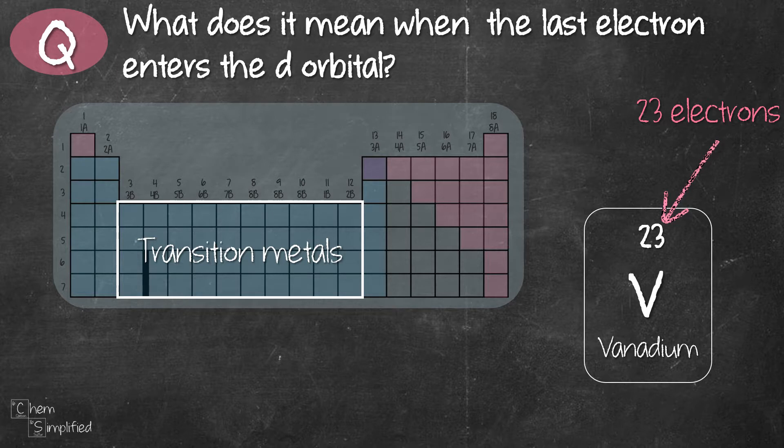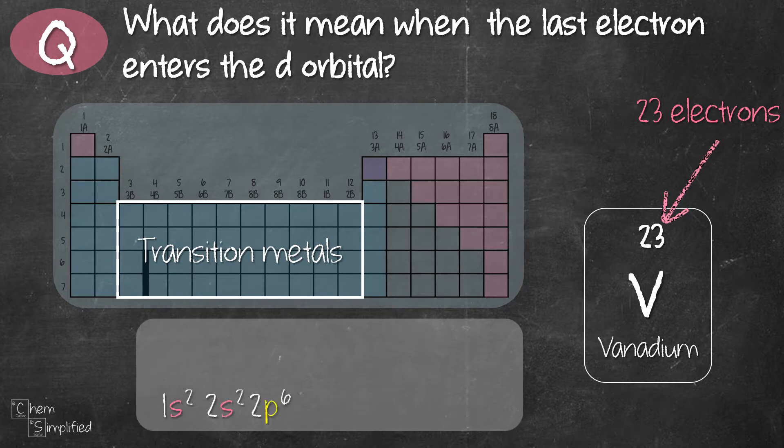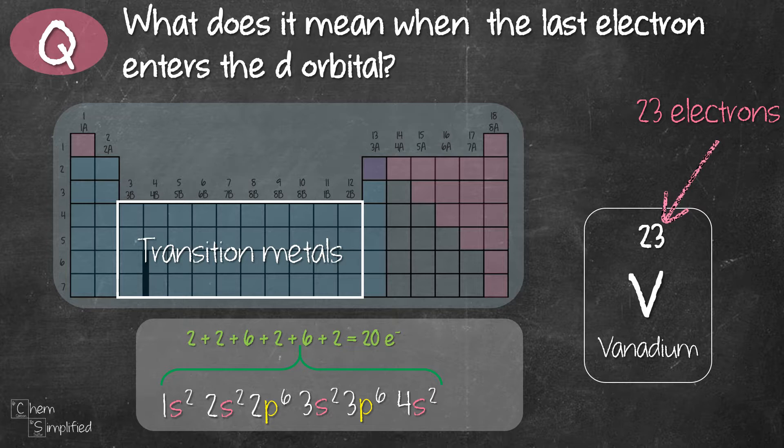This electrons will start filling up from 1S all the way until 4S. And with that, we've already used up 20 electrons. So vanadium has 23 electrons, right? So it will have remaining 3 more electrons. So the next orbital that the electrons are going to go to is going to be 3d. So we write 3d3. So the final electron is actually electron number 23, right? The final electron enters into the d orbital. And that is what it meant by the sentence. All transition metal elements will have its last electron located in the d orbital.